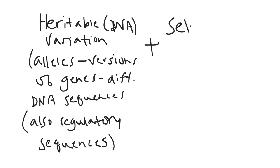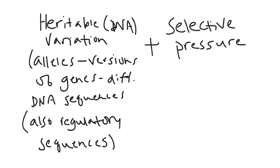You also have to have some sort of selective pressure. If you have no variation then there's nothing to move to from that initial population. For example, in the rock pocket mouse example, if all the mice are light and there are no dark mice in the population, then it doesn't matter that the light mice are getting eaten more often on the dark lava rock — there is nothing to move to. So a mutation has to arise that leads to variation.